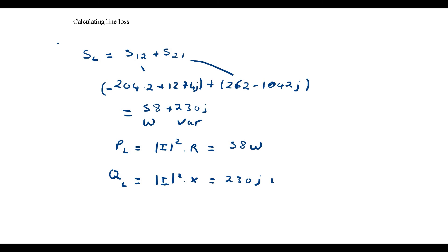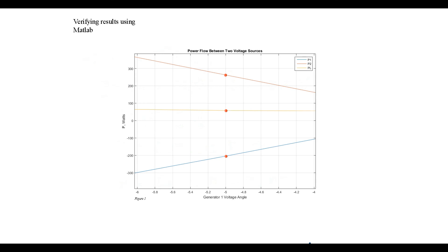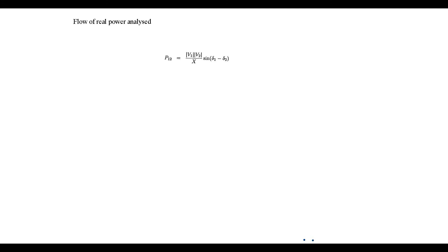Next we will use MATLAB to verify the results that we have calculated. In figure 1, the blue and red lines denote the real power flow in generator 1 and generator 2 respectively. From the graph it can be observed that generator 1 absorbs 204 watts, generator 2 generates 262 watts, and the difference is consumed by the transmission line denoted by yellow. If we consider a transmission line where R is negligible compared to X, allowing R equals 0 and the angle of X equals 90 degrees, any small change in voltage angle will result in a significant increase in power flow. Thus it is the phase angle and not the magnitude that determines real power flow direction.